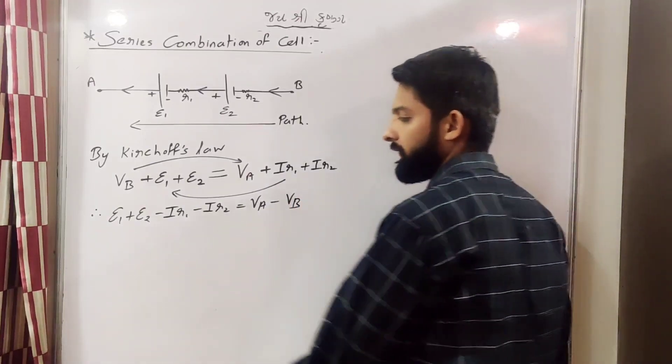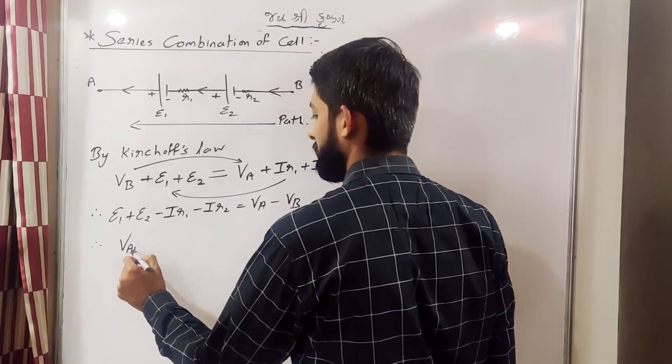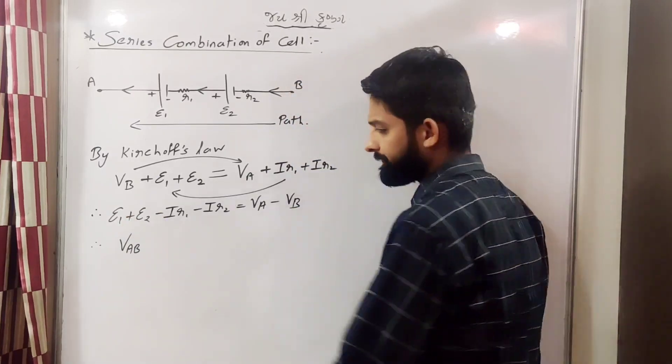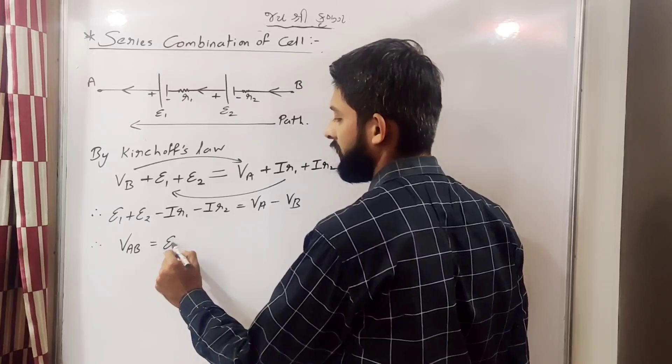So therefore potential difference between point A and B that will be equal to epsilon 1 plus epsilon 2 minus R common.